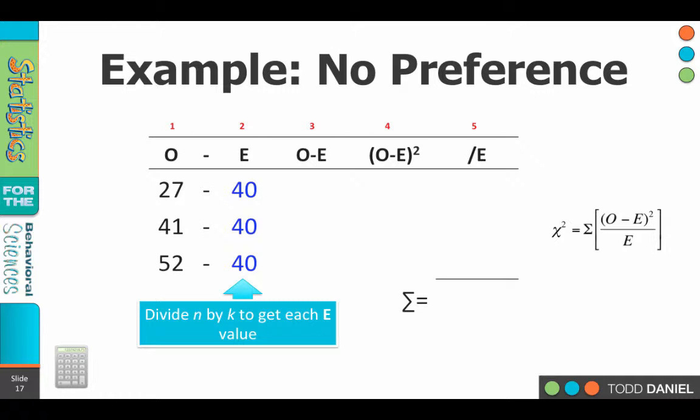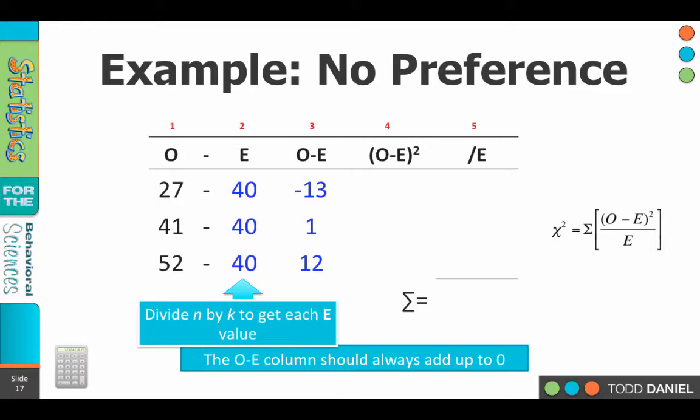Our next step is to calculate O minus E, observed minus expected. So we take each observed value, subtract from it the expected value. If it's negative, include the negative sign. 27 minus 40 is negative 13, 41 minus 40 is 1, and 52 minus 40 is 12.